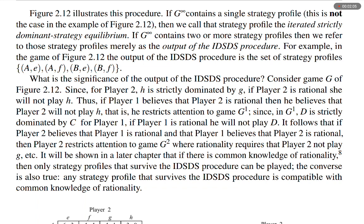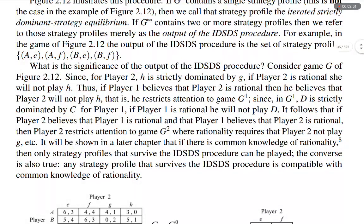If G∞ contains a single strategy profile — which is not the case in the example of Figure 2.12 — then we call that strategy profile the iterated strictly dominant strategy equilibrium. If G∞ contains two or more strategy profiles, then we refer to those strategy profiles merely as the output of the IDSDS procedure. For example, in the game of Figure 2.12, the output of the IDSDS procedure is the set of strategy profiles: {(A,E), (A,F), (B,E), (B,F)}.